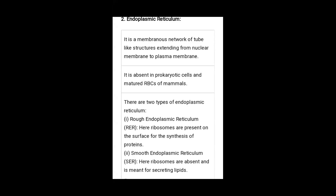Moving forward, we will discuss the endoplasmic reticulum. The endoplasmic reticulum is a collection of membranes and tubules found very close to the nucleus. It is of two types: RER — rough endoplasmic reticulum — and SER — smooth endoplasmic reticulum.